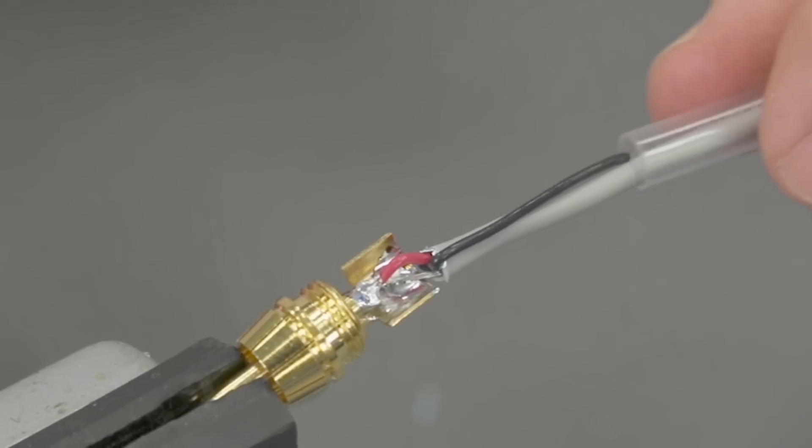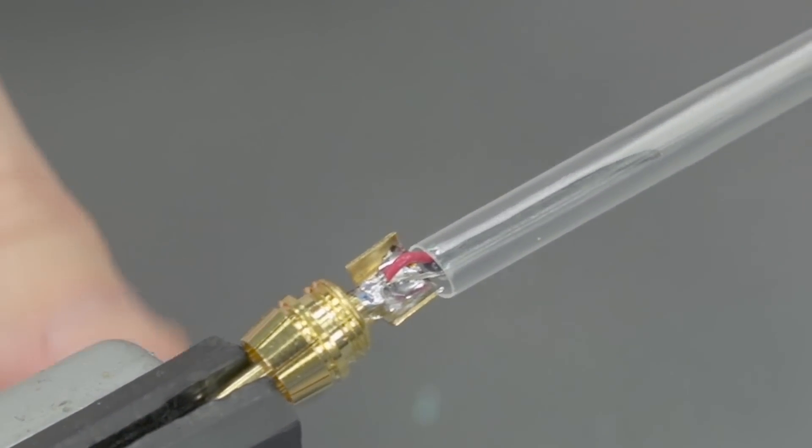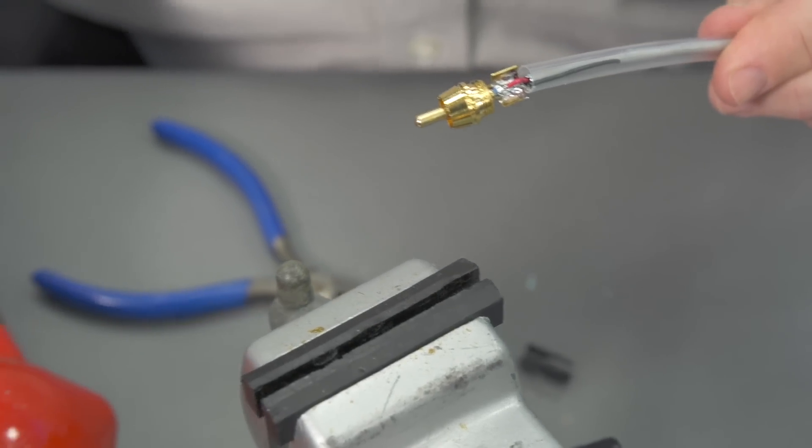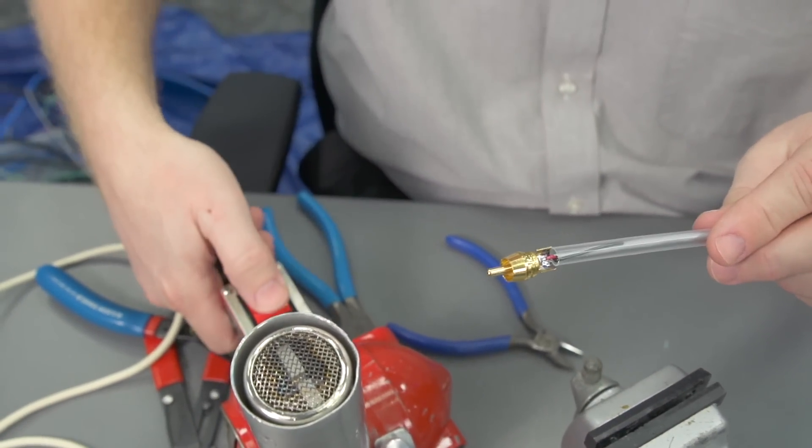We can go ahead and bring the heat shrink up now and we'll cover the black conductor with that. Bring our heat gun over, let's go ahead.